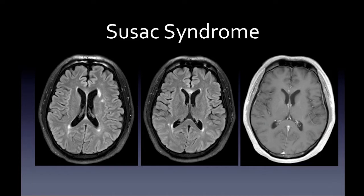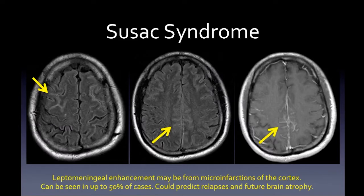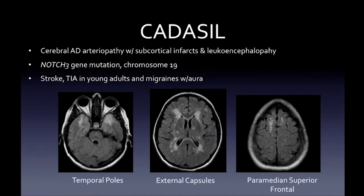In Susac syndrome you can see the mid-callosal lesion — central mid-callosal rather than callosal-septal location — and FLAIR-bright spots in the white matter and periventricular regions. Clinical red flags: subacute cognitive deficits early in the disease (which usually occurs much later in MS) and hearing loss. Susac syndrome can also show leptomeningeal enhancement in up to 50% of cases, thought to predict relapses and future brain atrophy. If you see leptomeningeal enhancement with white matter lesions on an initial workup, think of other entities including Susac syndrome.